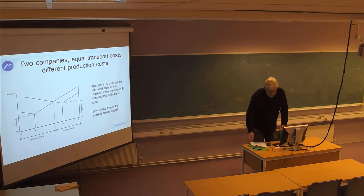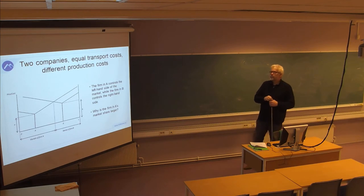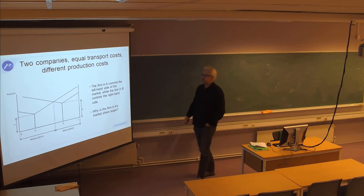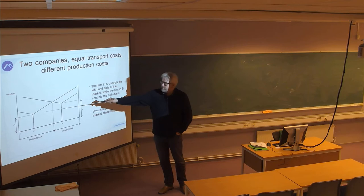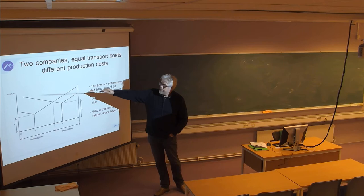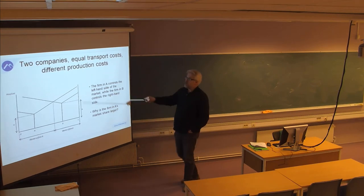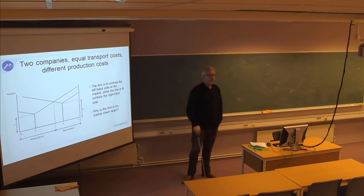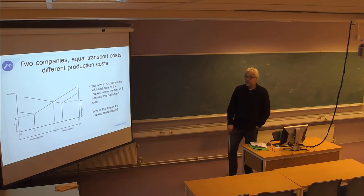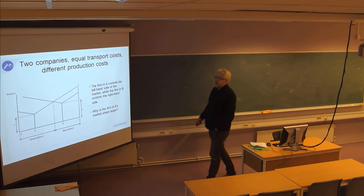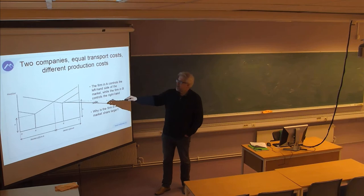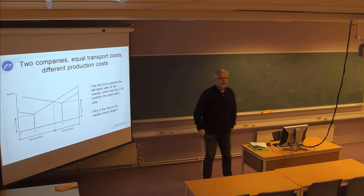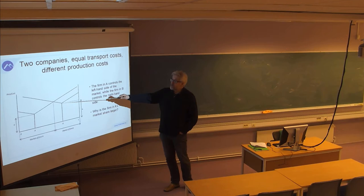Starting with the simplest solution: we have two companies with equal transport costs, measured through the slope of these curves. If we have distance in the horizontal dimension and costs in the vertical dimension, the slope of these lines gives you the cost per distance unit, which could be transport costs per kilometer. In this case, it's equal transport costs for each of the companies A and B, and the costs are equal in each direction.